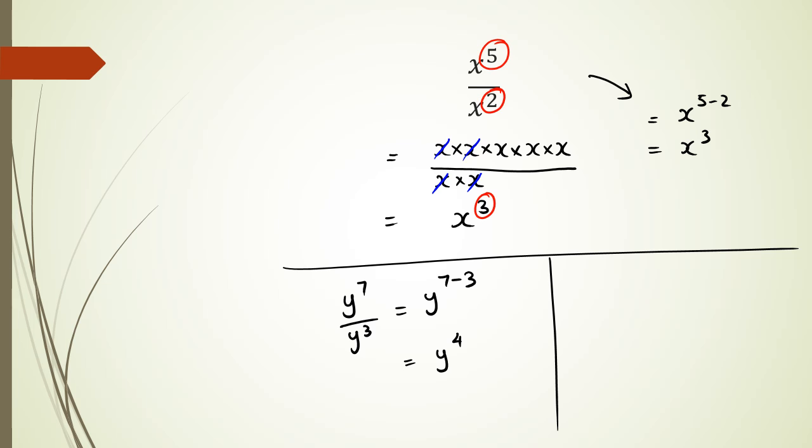And in some cases you will get something that looks like this: y to the power of 3 divided by y. A lot of people think that there's actually a zero there. That's not correct. If you have a y and it doesn't have a power, then it always means that it has a power of 1.